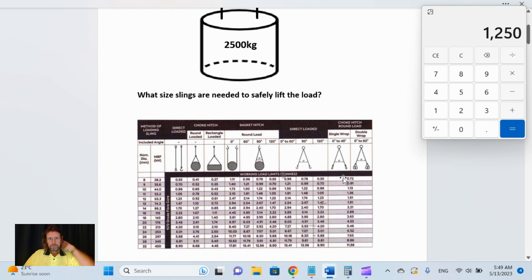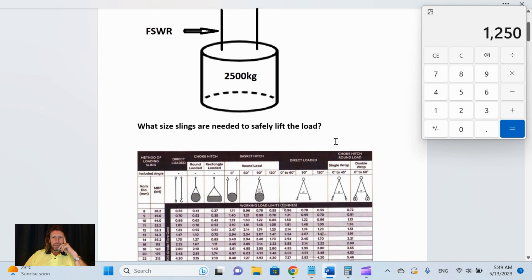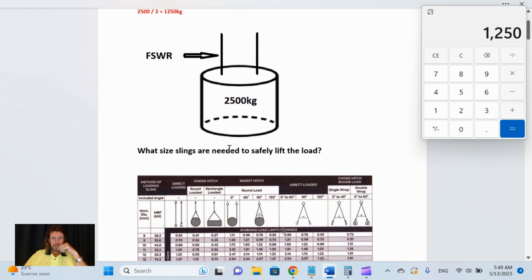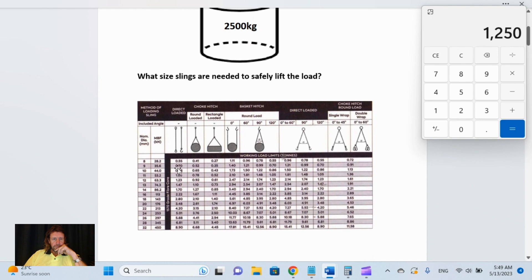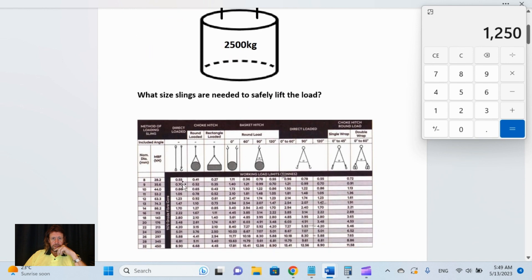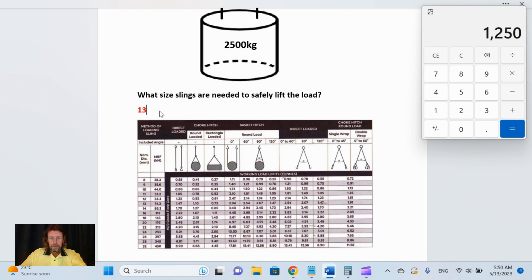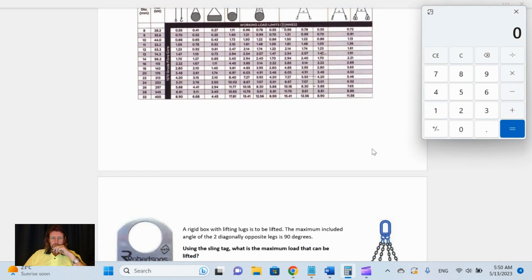Obviously you then need to go down to the sling charts and find the sling sizes. We look down here, we've got direct load there, so direct load means straight up and down. Direct load at 1250 kilograms each. We go down here: 1250 kilograms is 1.25 tons. We can see there's one there at 1.23, but we need to go the next one up which is 1.47, and then the size that we need is 13 millimeter slings.